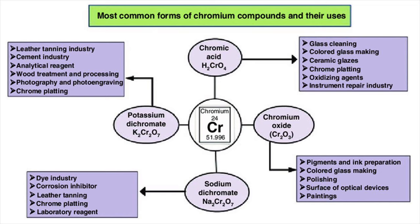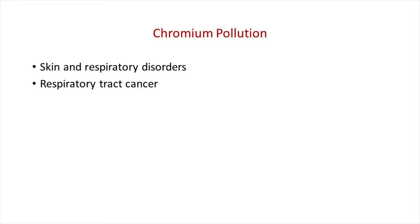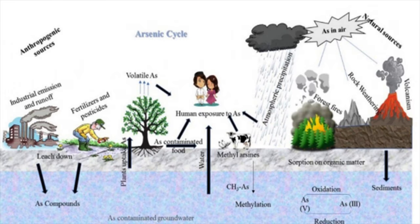Regarding chromium water pollution, natural waters get polluted with chromium through effluents from metal plating industries, leather tanning industry, cement industry, dye industry, and pigment industry. Chromium is toxic to aquatic and terrestrial organisms. In humans it causes skin and respiratory disorders and respiratory tract cancer.